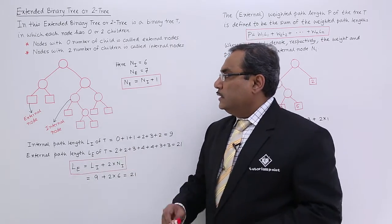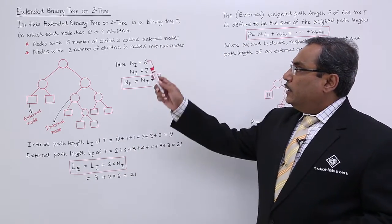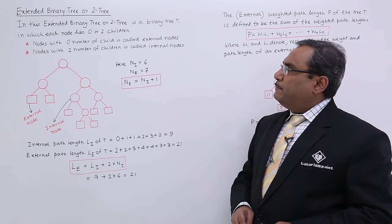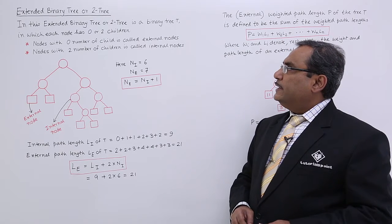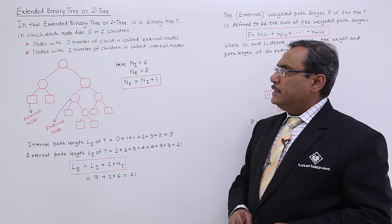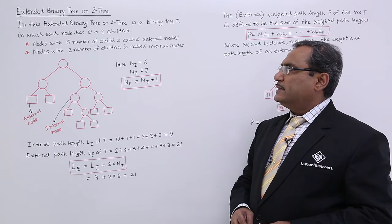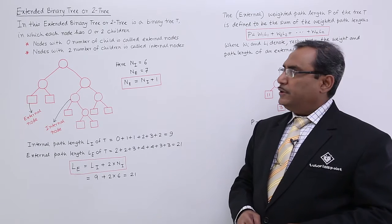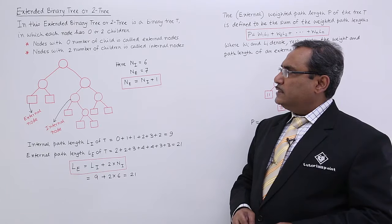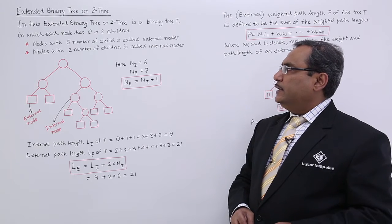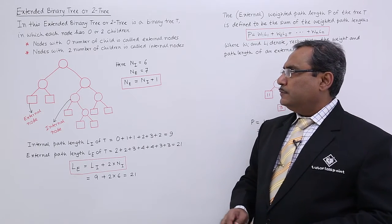So this is the diagram of a 2-tree. In this extended binary tree or 2-tree is a binary tree T in which each node has zero or two children. Nodes with zero number of child is called external nodes like this one.